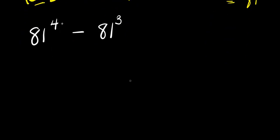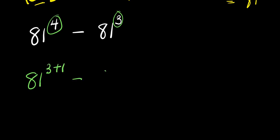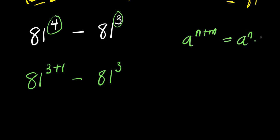From here I can express this four as the sum of three and one, because we already have three. So we have eighty-one to the power of three plus one, minus eighty-one to the power of three. Now if you have a to the power of n plus m, this equals a to the power of n times a to the power of m.